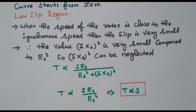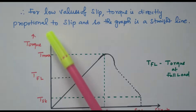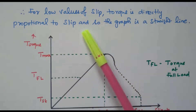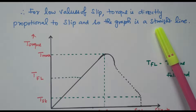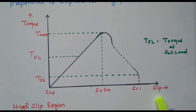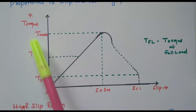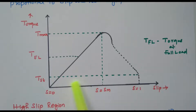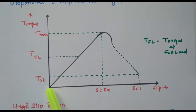Now we will see the diagram. For low values of slip, torque is directly proportional to slip, so the graph is a straight line. On the X-axis, slip is given; on the Y-axis, we have torque. The graph is drawn between slip and torque. S equal to 0 is at the origin. During the low slip region, T is directly proportional to S — when slip increases, torque also increases — so we get a straight line.